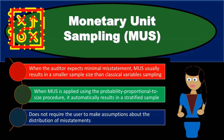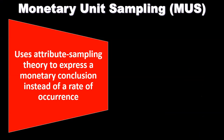In this presentation, we will discuss monetary unit sampling, or MUS. Monetary unit sampling uses attribute sampling theory to express a monetary conclusion instead of a rate of occurrence. We're going to be using those attribute sampling theories, but now we're going to express monetary conclusions — basically dollar amount conclusions — instead of a rate of occurrence.